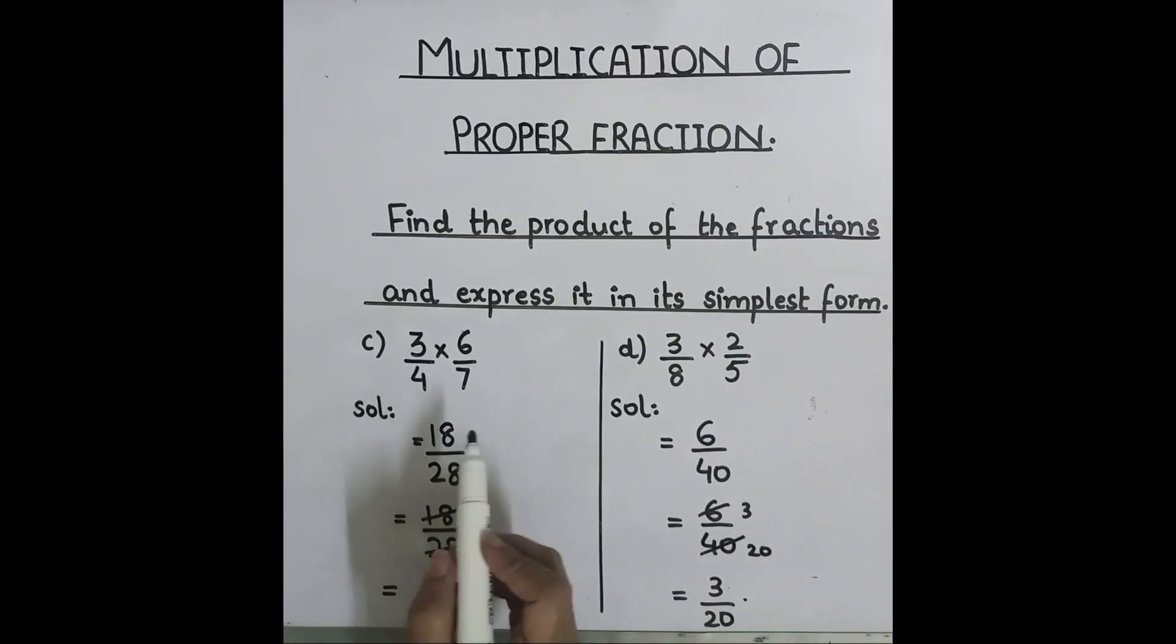Let's discuss some more examples. Three over four multiply by six over seven. Multiply numerators first and then denominators.